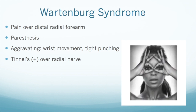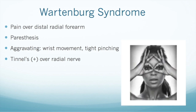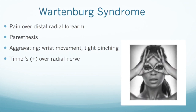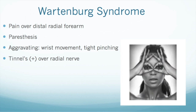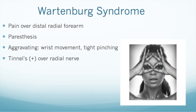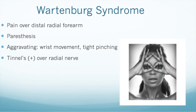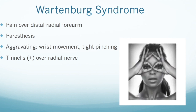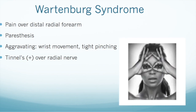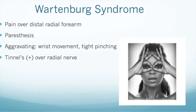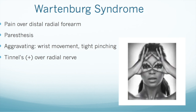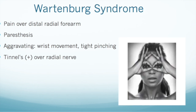To differentiate between Wartenberg syndrome and de Quervain's tenosynovitis, you can also use the xylocaine injection method discussed earlier. Here, if the symptoms are relieved but numbness still ensues, then it is positive for Wartenberg syndrome. These patients will be aggravated by any kind of wrist movement or tight pinching, and they will have a positive Tinel's test over the radial nerve.